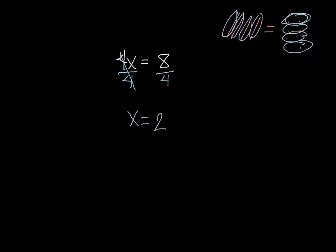When our problem starts with multiplication, I want to do the exact opposite — I want to divide. I'm doing the inverse operation, dividing by four on both sides to keep it balanced because I still have a balance scale here.